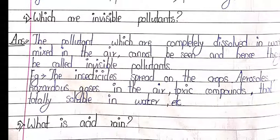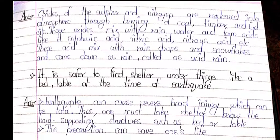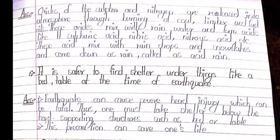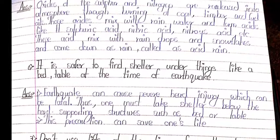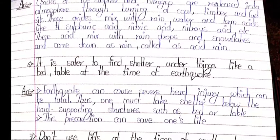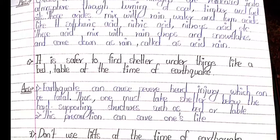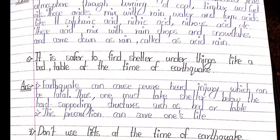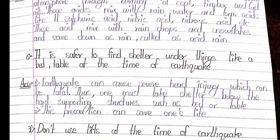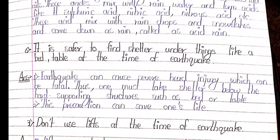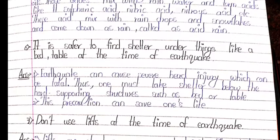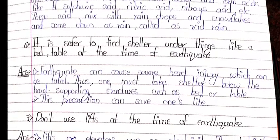Fifth: what is acid rain? Oxides of sulfur and nitrogen are released into the atmosphere through burning of coal, timber and fuel oils. These oxides mix with rainwater and form acids like sulfuric acid, nitric acid, and nitrous acid. These acids mix with raindrops and snowflakes and come down as rain, which is called acid rain.